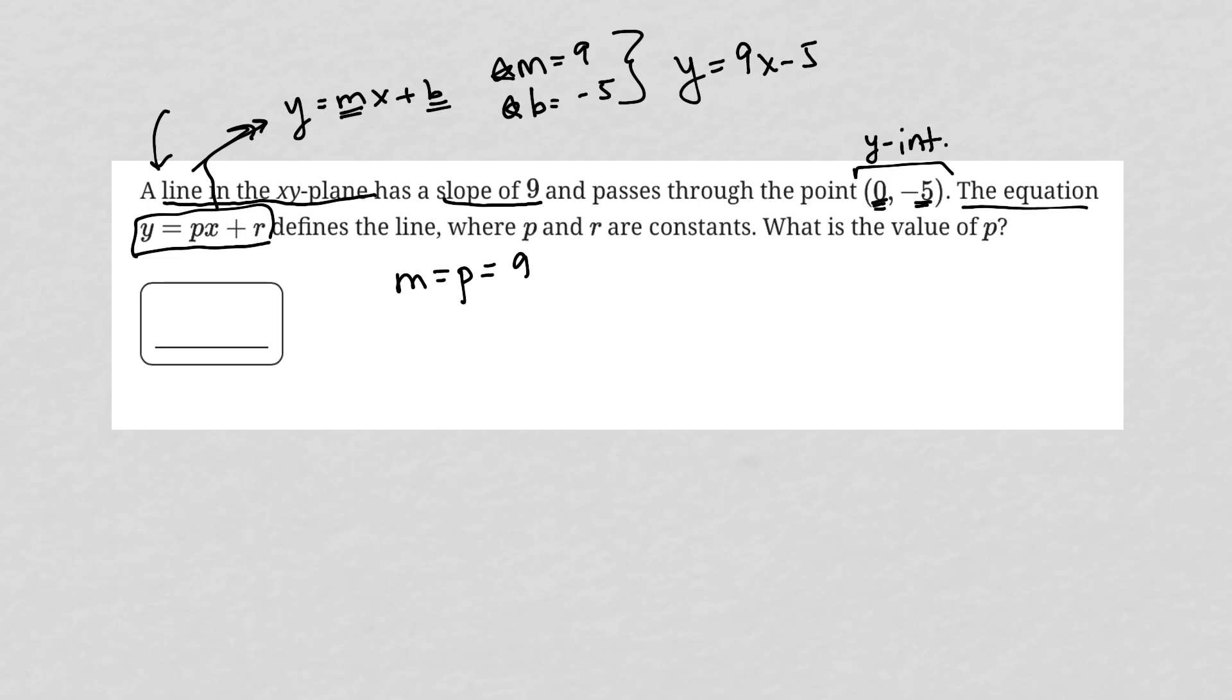And r, b has been replaced by r, so we know that r is negative 5, which means we still have the same equation, right? We still have y equals 9x minus 5 as our linear equation.